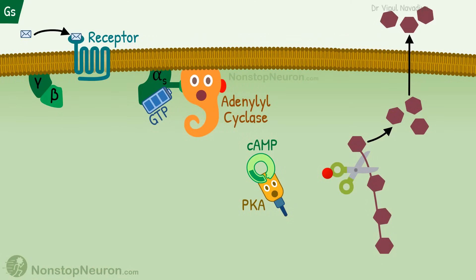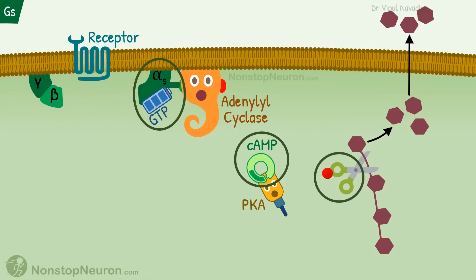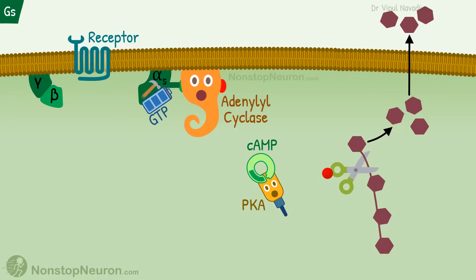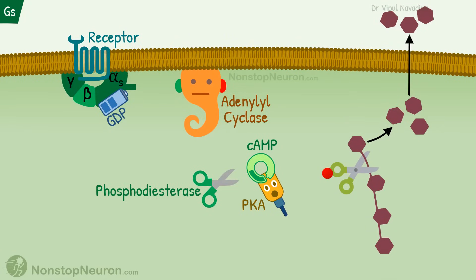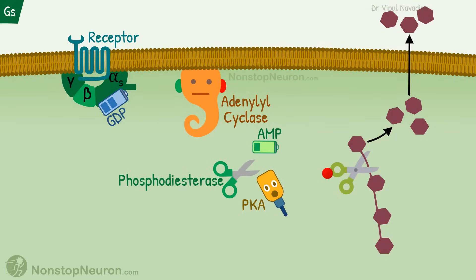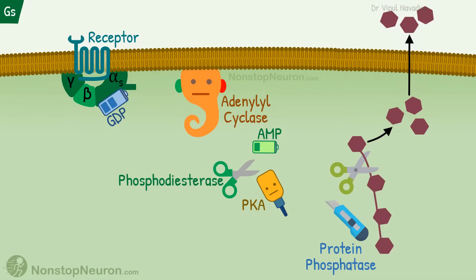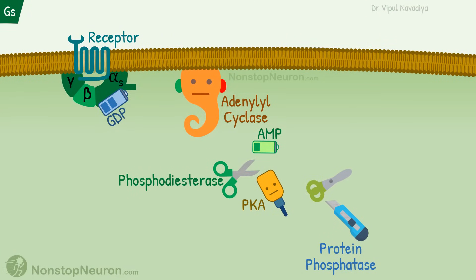Now let's talk about termination of the signal. When the external signal is no longer present, the intracellular signal is terminated at multiple levels. First, the alpha subunit itself has GTPase activity, so it hydrolyzes GTP into GDP and inorganic phosphate. The inactive GDP-bound alpha subunit dissociates from adenylyl cyclase and reassociates with the beta-gamma complex, preventing further activity of adenylyl cyclase. Next, an enzyme called phosphodiesterase breaks cAMP into AMP, decreasing cAMP concentration and preventing activity of PKA. Finally, various protein phosphatases cause dephosphorylation of whichever proteins were phosphorylated initially, reversing their activity. All of this contributes to the termination of the signal and response.